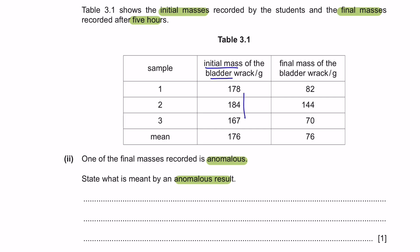And then the final masses of bladder was 82, 144, and 70 and the mean was 76. As you can see, these two values are pretty much the same. However, this value here has quite a significant difference with sample 1 and 3. So this here is your anomalous result which means that it is a result that does not fit the pattern or the trend of the current values.